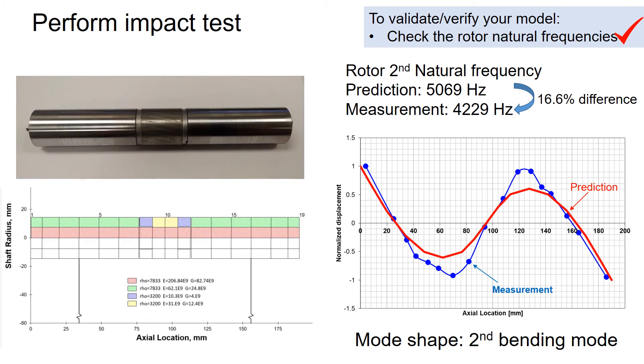This kind of difference is very typical in modeling rotor dynamics, because most of the rotor assembly is not made with one single piece. The interference fit between the parts can affect the natural frequencies.